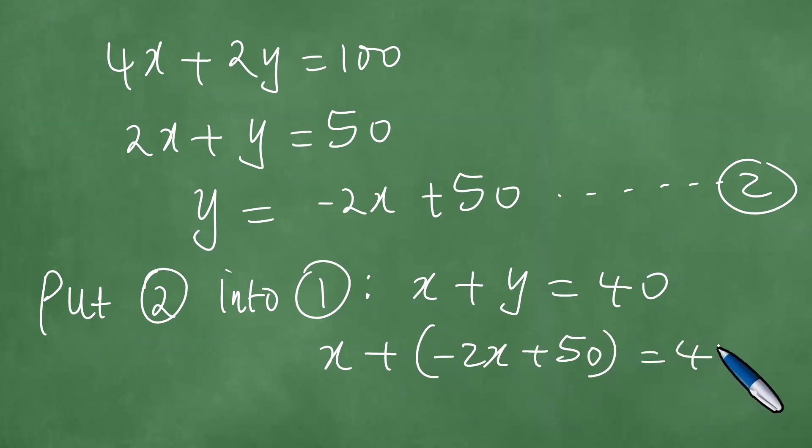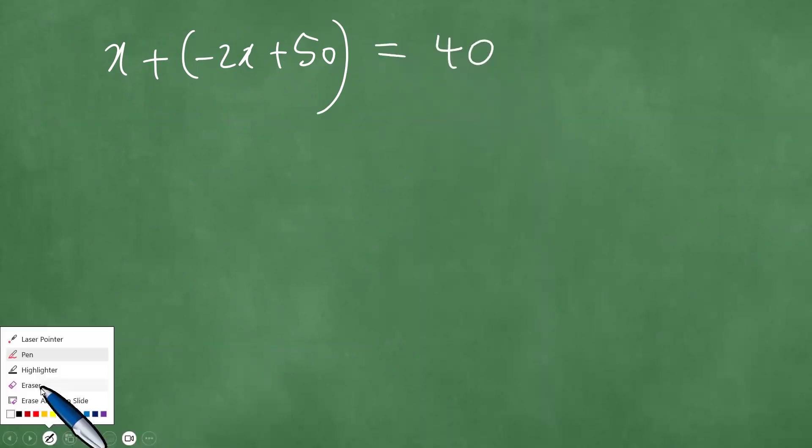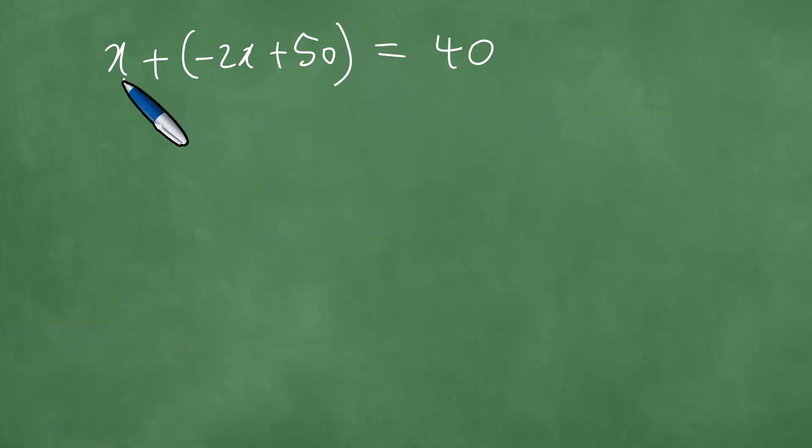And then this is X plus minus 2X plus 50, and the result equals 40. We proceed to simplify this step by step. X plus minus 2X will give us minus X equals 40 minus 50. Minus X equals minus 10. Divide through by negative one, getting X equals 10.